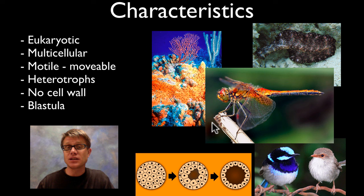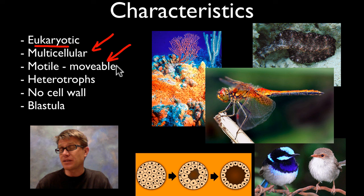Before we get to that, let's talk about some of the characteristics of animals. We already said that they're eukaryotic, so they have nuclei. All of these are going to be multicellular. And they're motile — in other words they move around, or they have stages in their life when they're going to move. The opposite of motile is sessile, S-E-S-S-I-L-E.